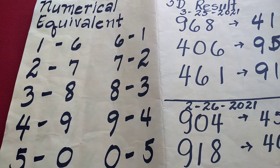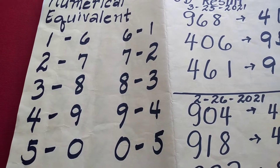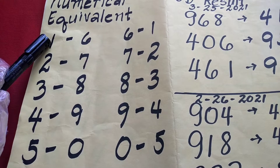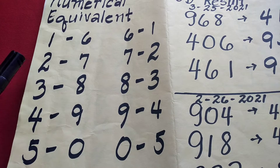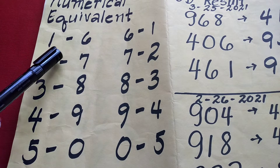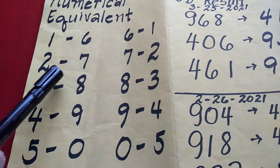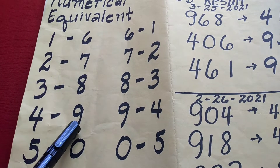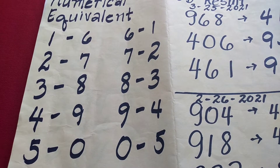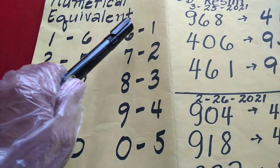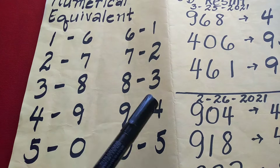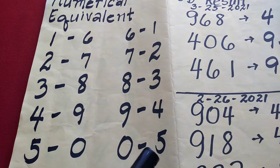Ang numerical equivalent ay mga katubas na mga numero. Halimbawa, ito ay 1. Yung katumbas niyang numerical equivalent ay 6. Ang 2 ay 7, 3 ay nagiging 8, 4 nagiging 9, 5 nagiging 0. Tapos yung 6 ay nagiging 1, 7 nagiging 2, 8 nagiging 3, 9 nagiging 4, at saka 0 nagiging 5.